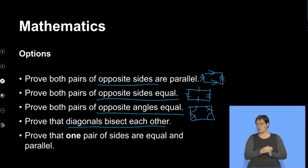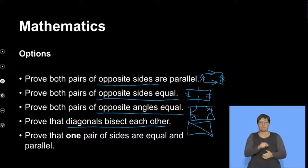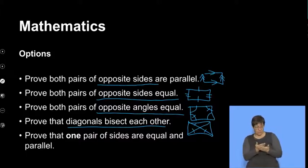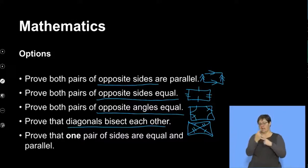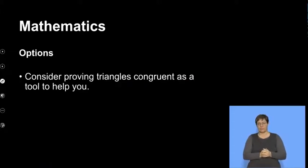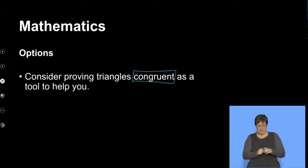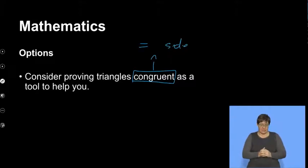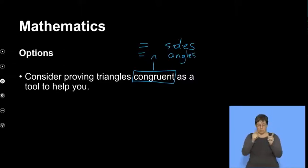The method we'll likely use is proving the diagonals bisect each other, because we're already told one line is bisected. If we can prove the other is also bisected, the diagonals bisect each other. There's also the option to prove one pair of sides is both equal and parallel. Consider proving triangles are congruent — not just for congruence itself, but to extract equal sides or equal angles from it.